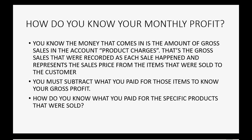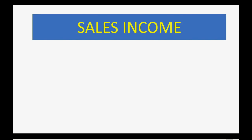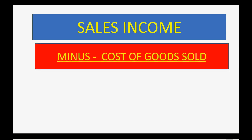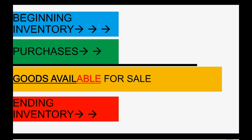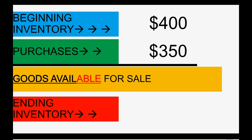How do you know what you paid for the specific products that were sold? The main calculation for finding your profit is: sales income minus what you paid for the merchandise you gave the customer — which is cost of goods sold — equals your gross profit. It's this middle number that we have to focus on. Cost of goods sold equals beginning inventory plus purchases, which equals goods available for sale.